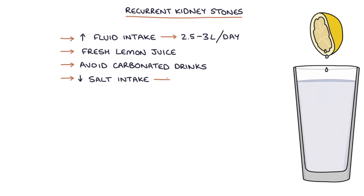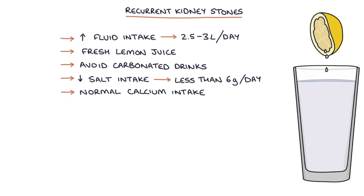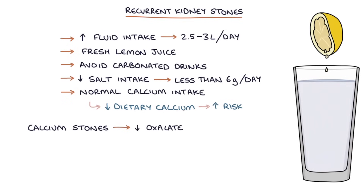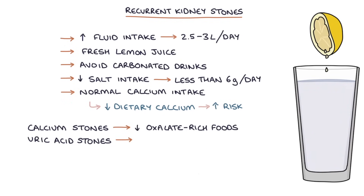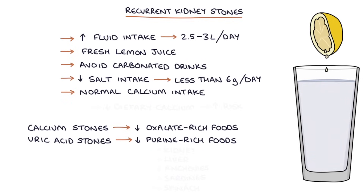Patients should reduce dietary salt intake to less than 6 grams per day and maintain a normal calcium intake, as a low dietary calcium may actually increase the risk of kidney stones. For calcium stones, reduce intake of oxalate-rich foods such as spinach, beetroot, nuts, rhubarb, and black tea. For uric acid stones, reduce intake of purine-rich foods such as kidney, liver, anchovies, sardines, and spinach, and generally limit dietary protein intake.